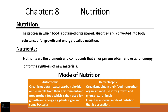The process in which food is obtained or prepared, absorbed, and converted into body substances for growth and energy is called nutrition. Food basically consists of some essential nutrients that are required to perform all these activities. Nutrients are the elements and compounds that an organism obtains and uses for energy or for the synthesis of new materials.